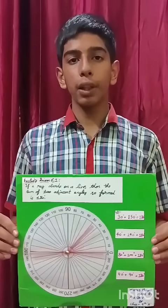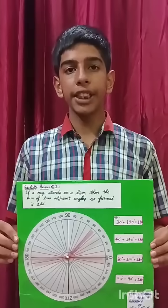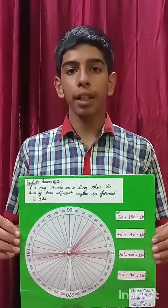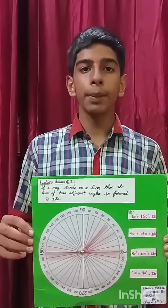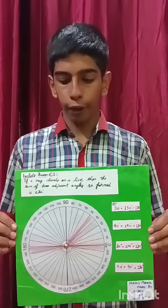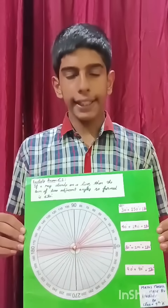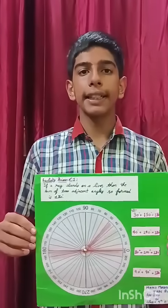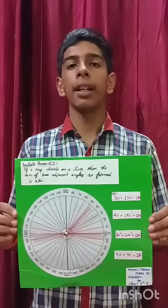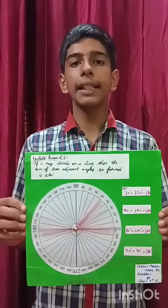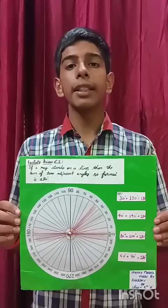Hello everyone, I am Aradhyay of class 9th from PM Shri Kendriya Vidyalaya No. 1 Roorkee. I'm here to present my maths model on the topic Euclid's axiom 6.1, which states that if a ray stands on a line, then the sum of two adjacent angles so formed is 180 degrees.